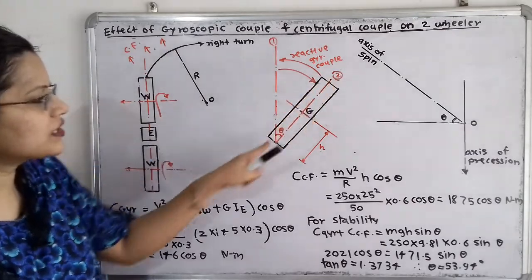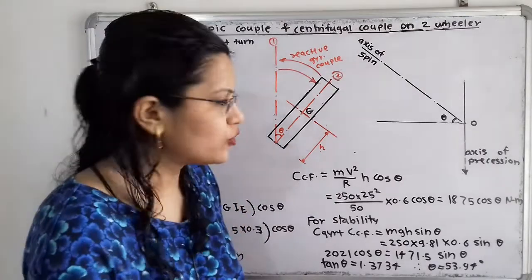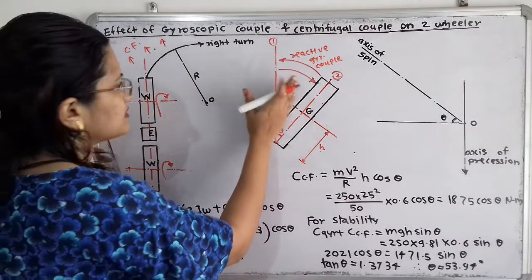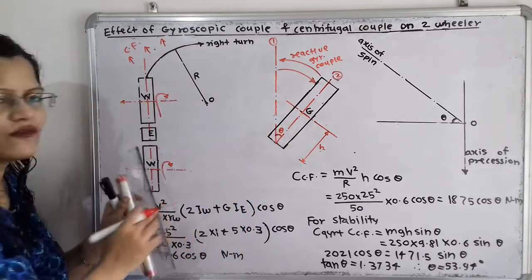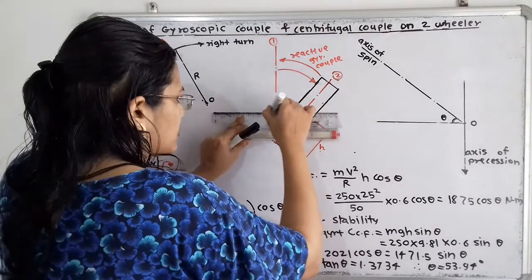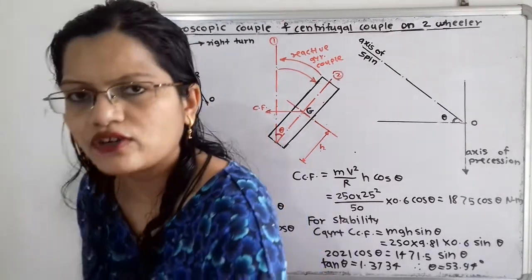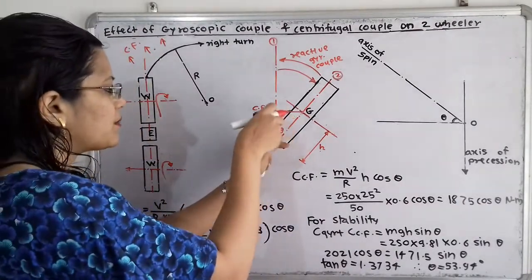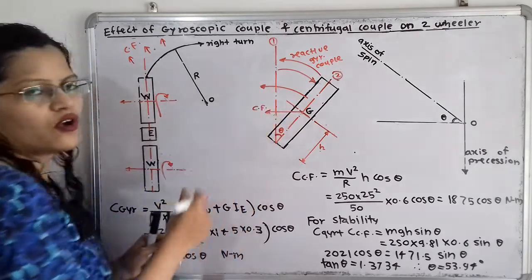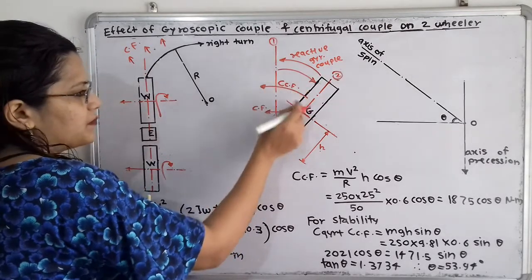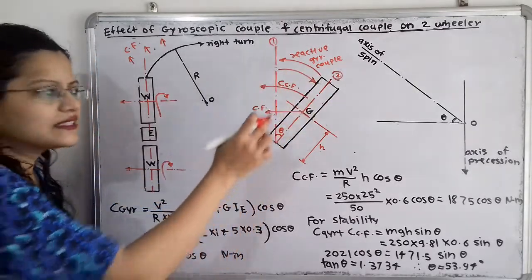The centrifugal force passes through the center of gravity point G. Since this wheel is turning towards center O — the center of curvature — we show the centrifugal force in the outward direction. Using the compass rule for this centrifugal force, it also gives an effect in the anti-clockwise direction. So both the centrifugal couple and the gyroscopic couple act in the same anti-clockwise direction.